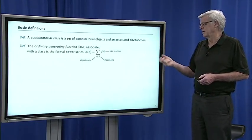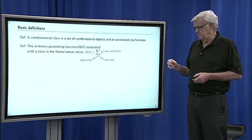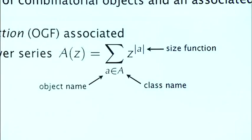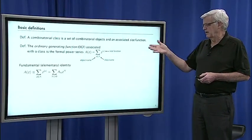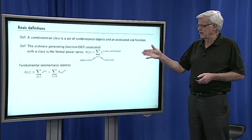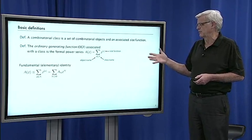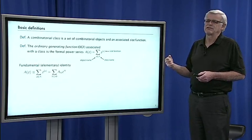The size function is like an absolute value. It just says that's the size of the object. The class name is usually a capital letter with the same letter as the generating function. The object name is usually a lowercase letter of the same letter.